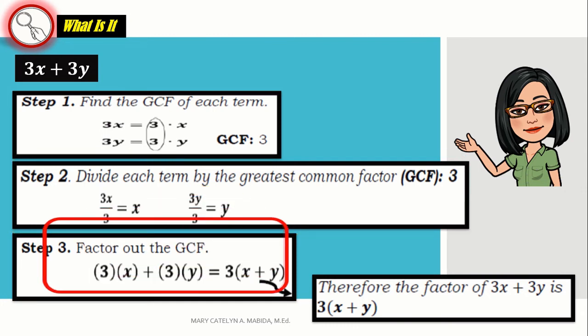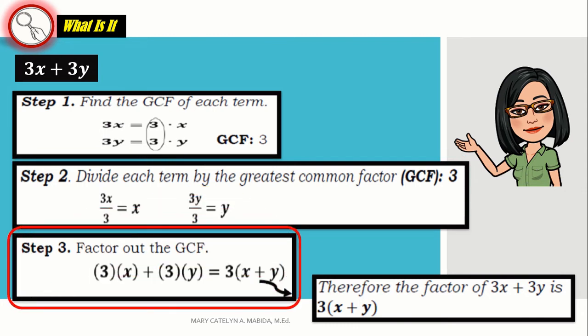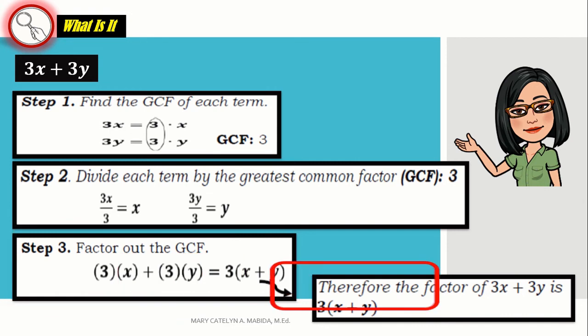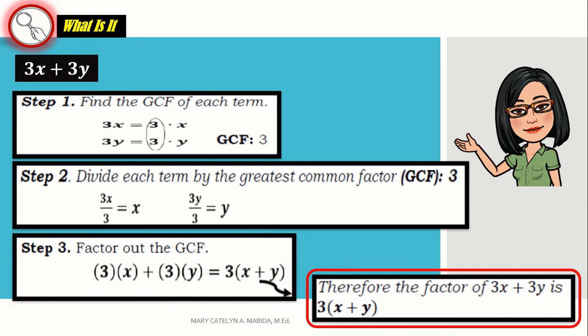Let's go to step 3. Factor out the GCF. Again, our GCF is 3. And then, we combine what's left, which is x plus y. Therefore, the factor of 3x plus 3y is 3 times the quantity of x plus y. Good job!